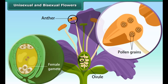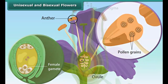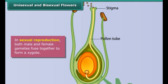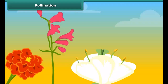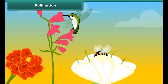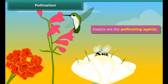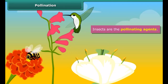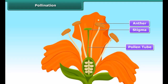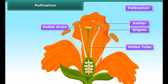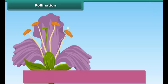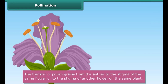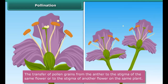Unisexual and bisexual flowers. Corn, papaya, and cucumber flowers have either the stamens or the pistil — these types of flowers are called unisexual flowers. On the other hand, hibiscus and mustard flowers contain both stamens and pistil — these types of flowers are called bisexual flowers. The anther of a flower contains pollen grains which produce male gametes. The female gamete is formed in an ovule. In sexual reproduction, both male and female gametes fuse together to form a zygote.